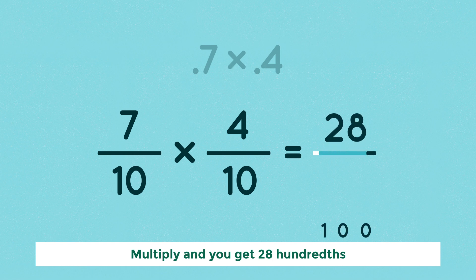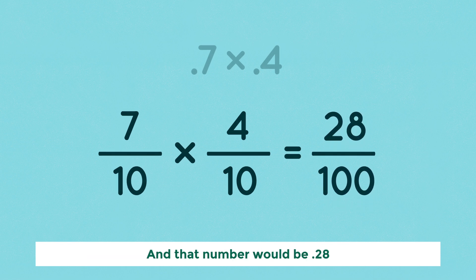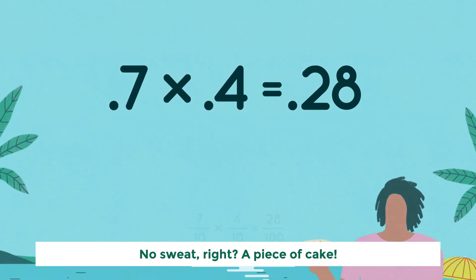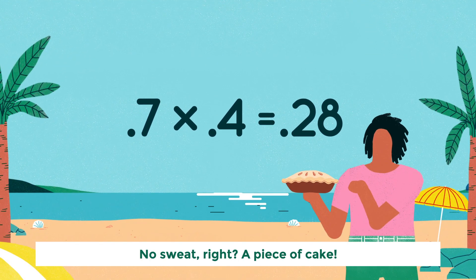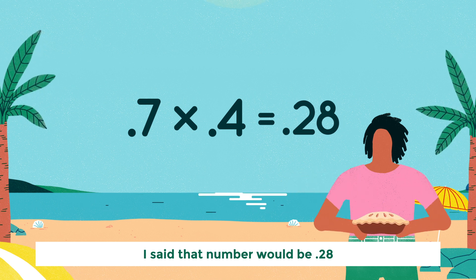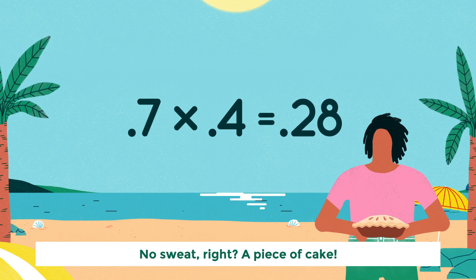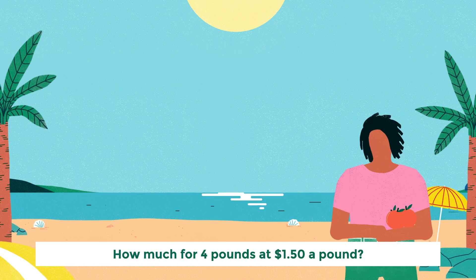Multiply and you get 28 hundredths. Or convert the product to a decimal if you want it — that number would be 0.28. No sweat, right? A piece of cake.